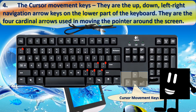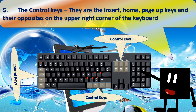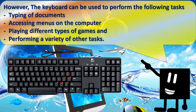The cursor movement keys are the four cardinal arrows used in moving the pointer around the screen. 5. The control keys — these are the insert, home, and page keys, located at the upper right corner of the keyboard. The keyboard can be used to perform the following tasks: typing of documents, accessing menus on the computer, playing different types of games, and performing a variety of other tasks.